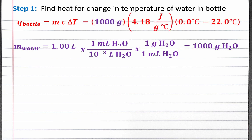We can plug this number into our equation for heat, along with the specific heat capacity given in the problem, which is 4.18 joules per gram degrees Celsius, and the change in temperature for the water, which is T final minus T initial, or 0 degrees Celsius minus 22 degrees Celsius. Completing the calculation, heat equals negative 9.196 times 10 to the fourth joules. The negative means heat needs to leave the water for the temperature to go down.